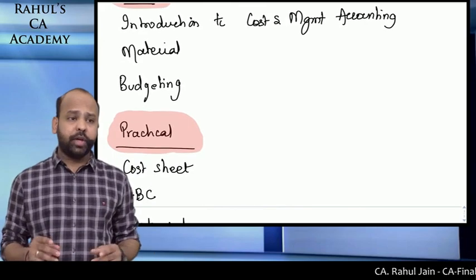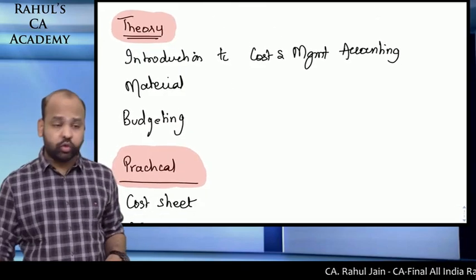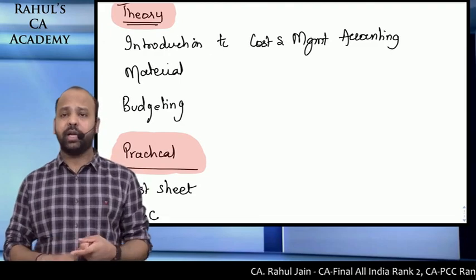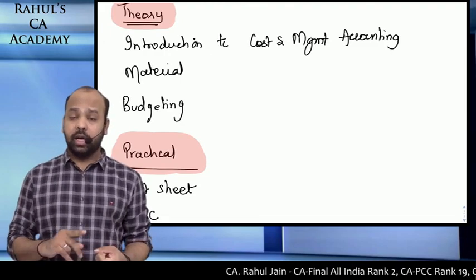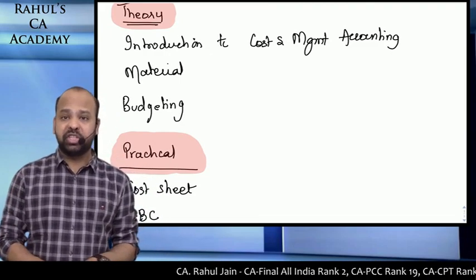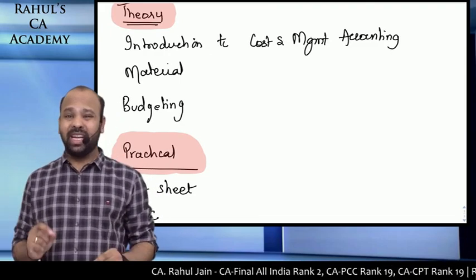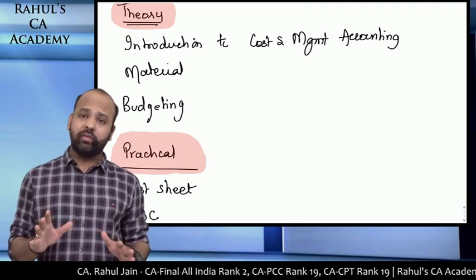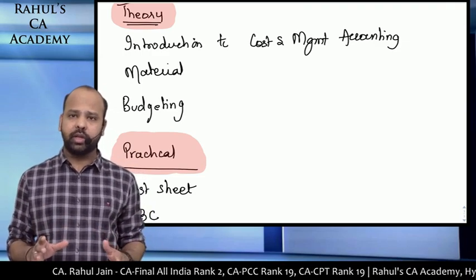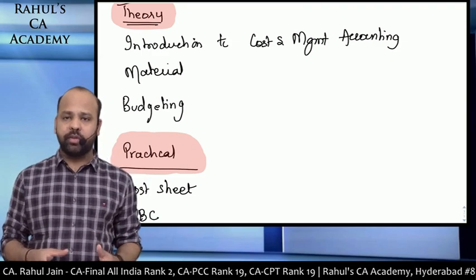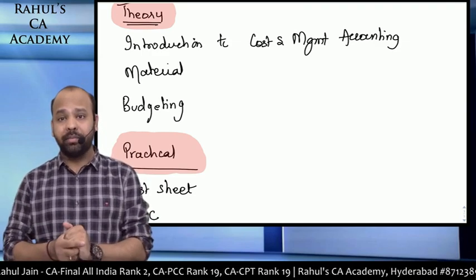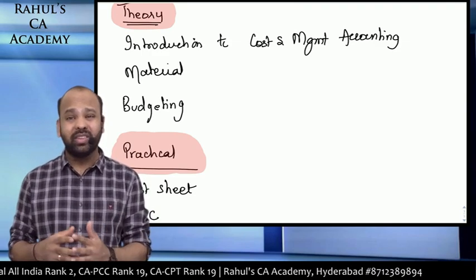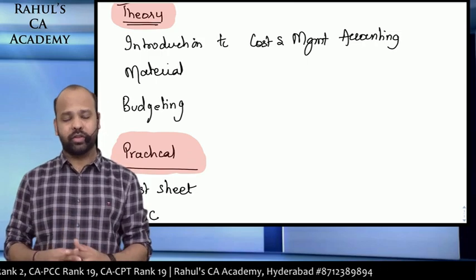Summarizing for theory topics: you should concentrate the most on Introduction to Cost and Management Accounting, the Materials chapter, and the Budgeting chapter. I'm not saying other topics won't be asked — theory questions from other topics can appear too — but those are relatively easier topics directly related to your concepts.